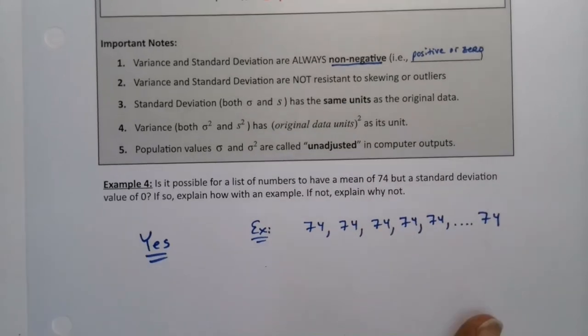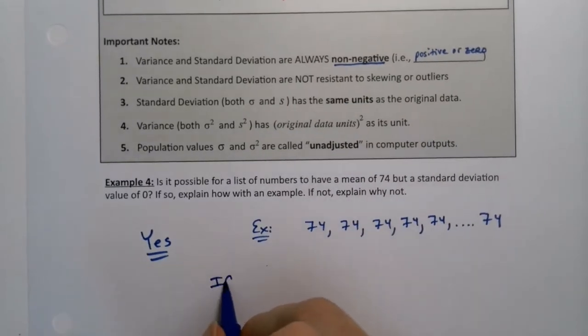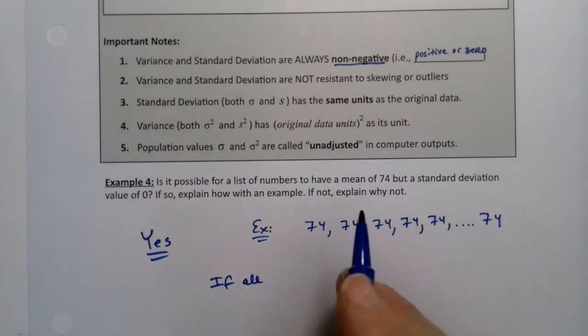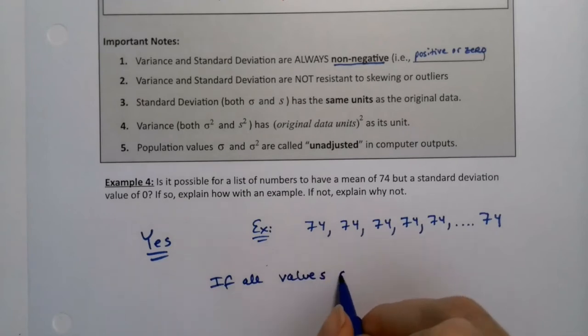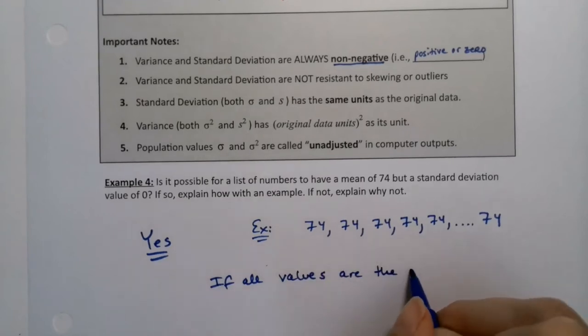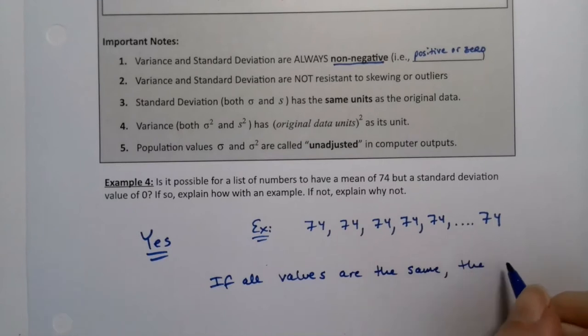Suppose your class was this. If all students score the same, the reason I picked 74 was that was that quiz. So if all values are the same, the standard deviation is zero.